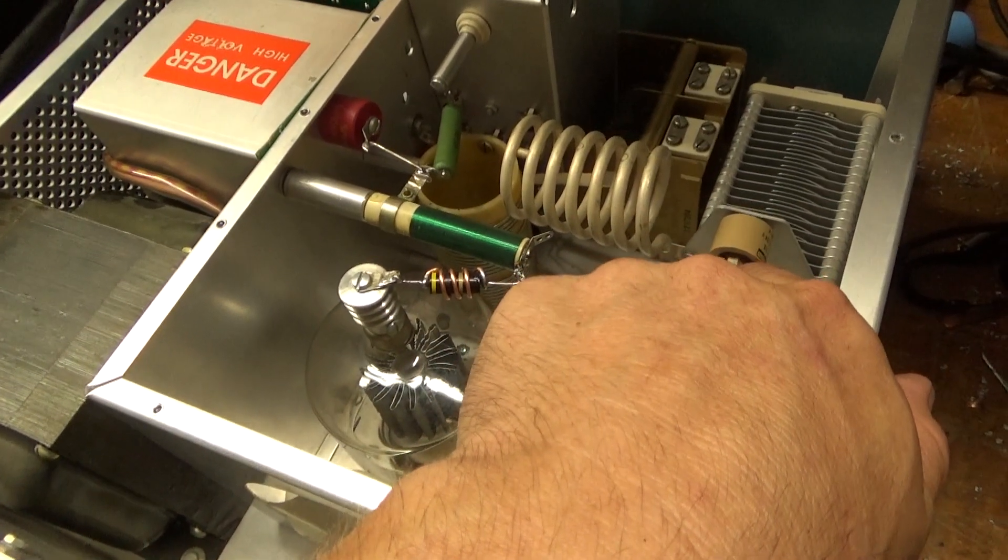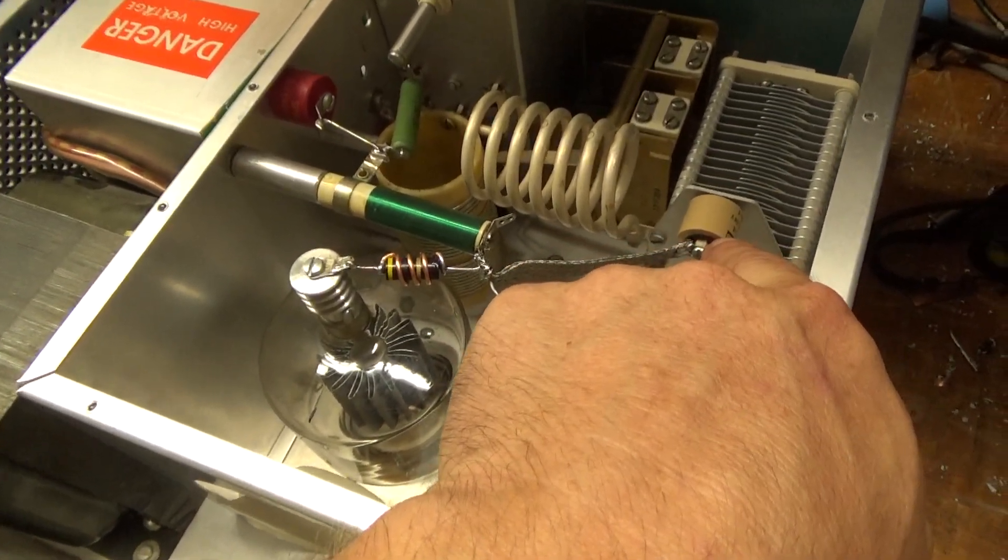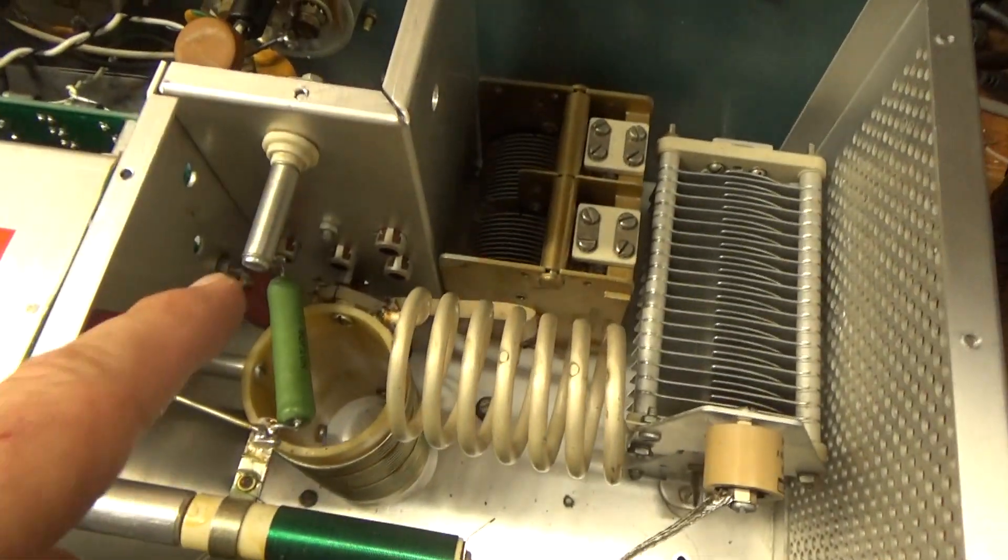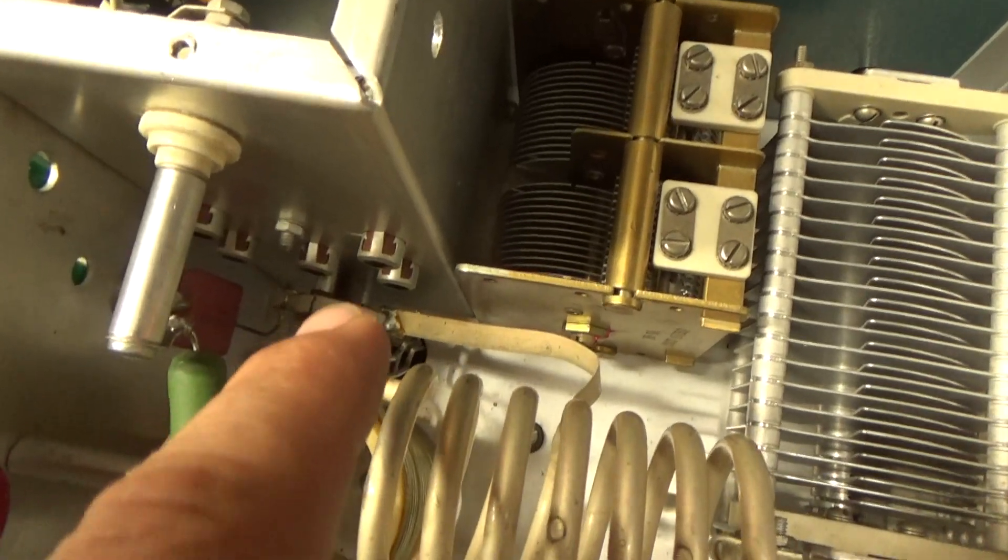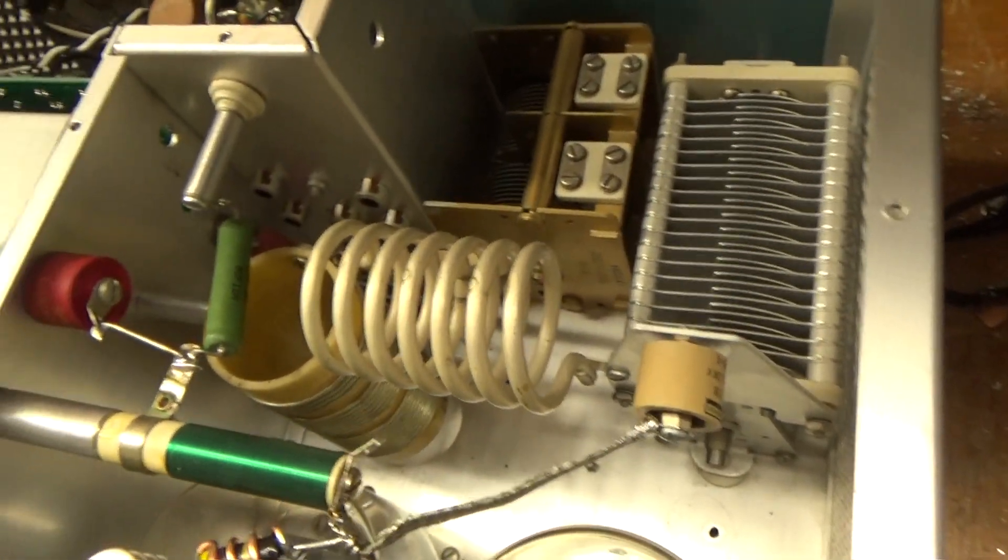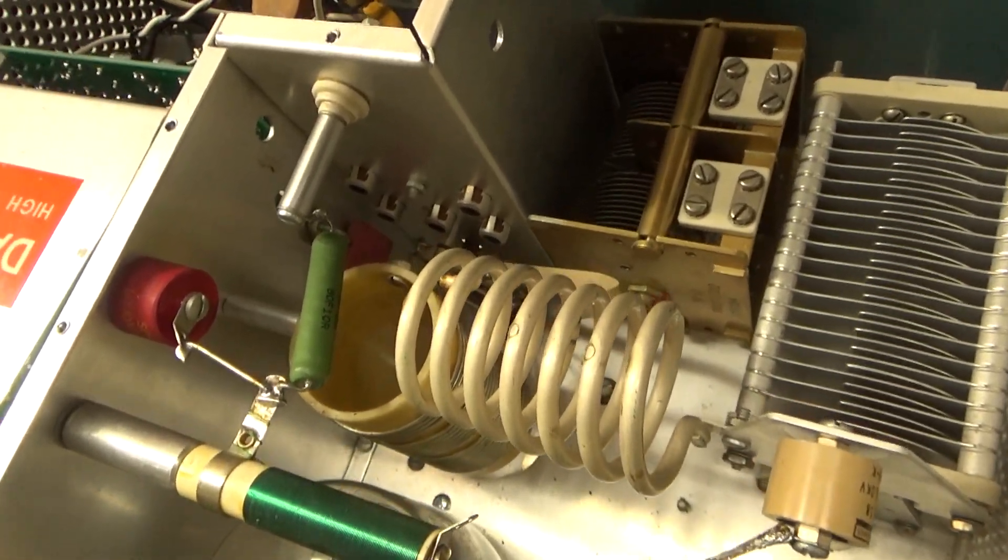So, I put a new Hynergy Corporation, 1000-Puff 5KV doorknob cap in. I ended up cleaning the output rotary switch. Used deoxic gold. It's good now.